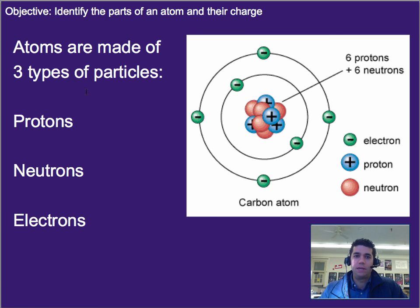Now, there are three major types of particles within an atom. That is, we have protons, neutrons, and electrons, and we're going to go through each one.